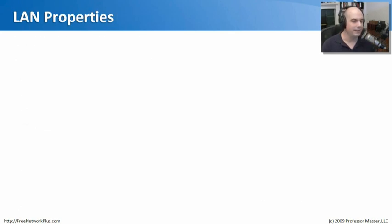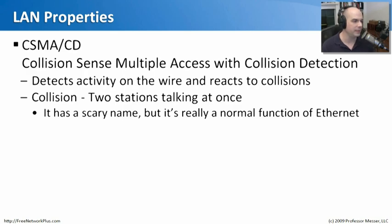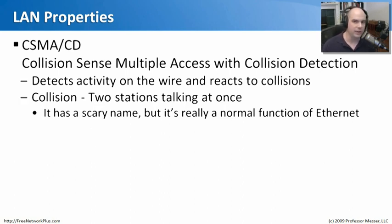Before we get into describing the specifics of individual local area network types, let's talk about the properties we would expect to see. One you'll hear referred to quite often in ethernet is something called Collision Sense Multiple Access with Collision Detection. This means that stations on the network are listening for something called a collision — they're trying to send traffic out.